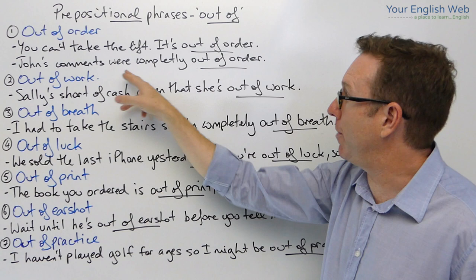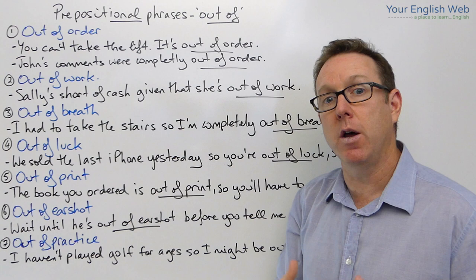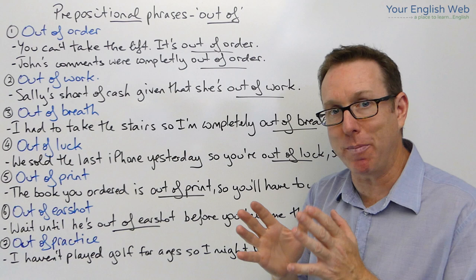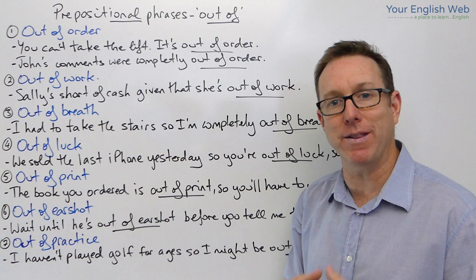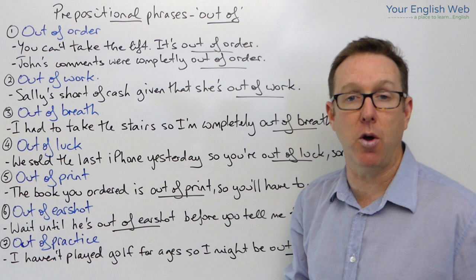But 'out of order' also has another meaning. The first meaning: you can't take the lift, it's out of order, meaning that it's not working. The second definition: 'John's comments were completely out of order.' This is a common expression in the UK especially, to mean that something is not appropriate, or perhaps another person was offended by something that somebody did or said. So 'out of order' can mean not working, and in the sense of behavior or comment, it can also mean not appropriate.